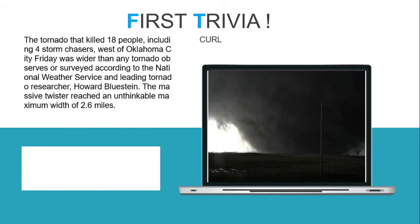You can just read the questions or pause the video so that you can answer. Trivia 1: The tornado that killed 18 people including 4 storm chasers west of Oklahoma City on Friday was wider than any tornado observed or surveyed, according to the National Weather Service and leading tornado researcher Howard Bluestine. The massive twister reached an unthinkable maximum width of 2.6 miles. What is the name of this tornado? Just pause and proceed.